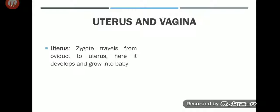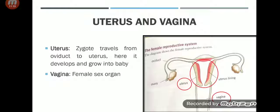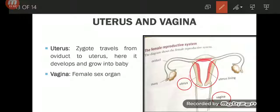The cilia cells move eggs slowly along the oviduct. Fertilization happens in the oviduct. After fertilization, when the zygote is formed, it travels to the uterus where the baby develops and grows. The vagina is the female sex organ. In this picture I have highlighted the uterus and the vagina. Fertilization happens here, and after fertilization the zygote travels to the uterus where it develops into a baby.